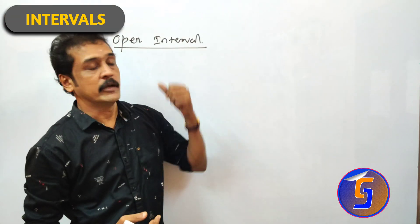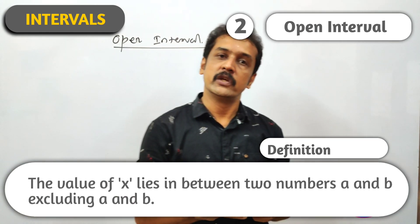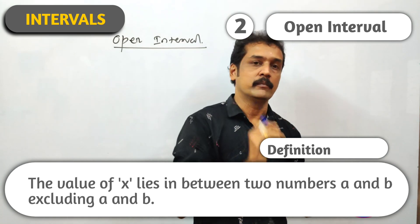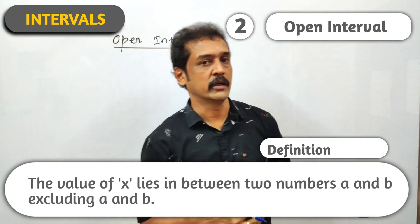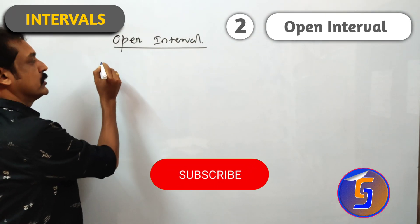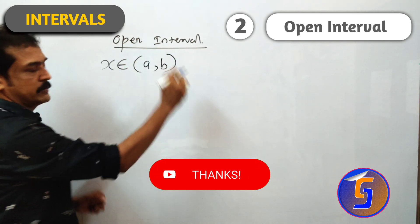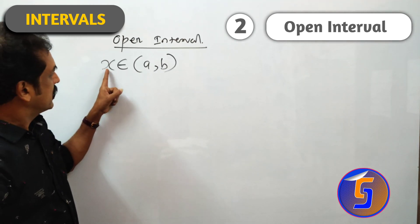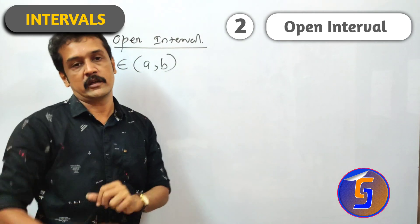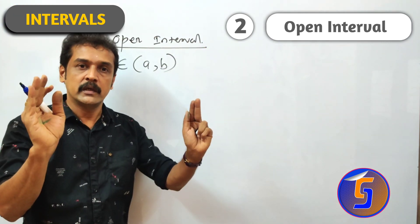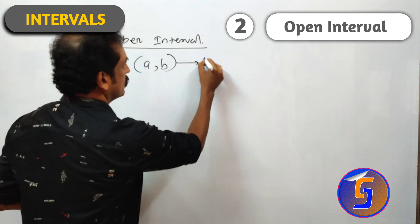The second interval is called Open Interval. Definition: the value of x lies in between two numbers a and b, excluding a and b, is called an Open Interval. It can be denoted in roster form as x element of open interval (a, b), using simple brackets, since a and b are not included.